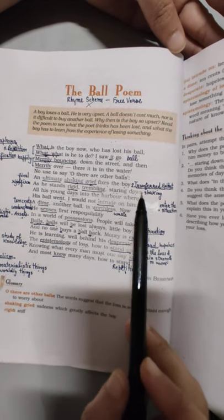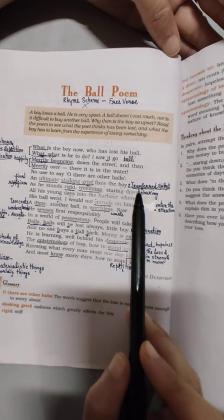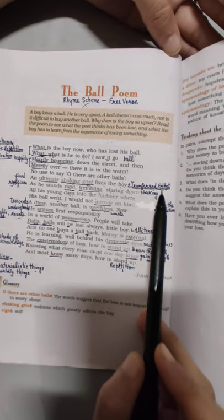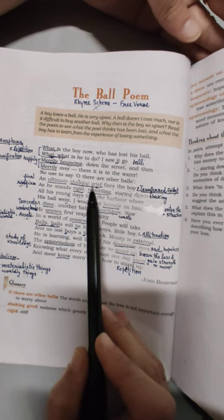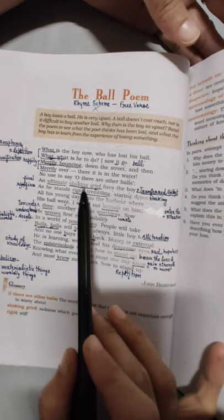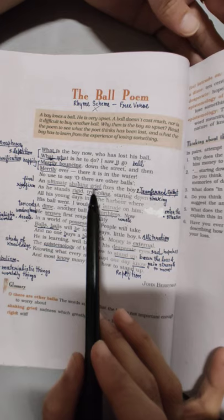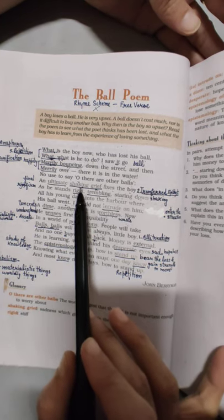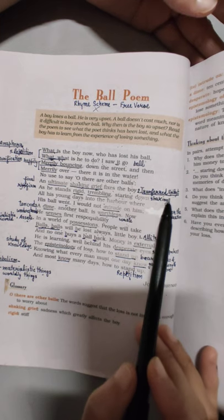Phir next literary device: Transferred epithet. Epithet means adjective, transferred means jahan pe lagna chahiye wahan se transfer karke kisi aur noun ke paas usse lagaya gaya hai. Toh iska example yaha par dekhe, yaha is wali line mein: an ultimate shaking grief. Toh yaha par shaking grief mein transferred epithet ka use kiya gaya hai. Shaking yarni trembling, kaun tremble kar raha hai, kis ki body kaap raha hai - boy ki. Lekin shaking ko boy ke saath use nahi kiya hai, grief ke saath use kiya hai. Kya dukh ko kisi ne kaapte huye dekha hai? Nahi. Toh yaha par shaking jo adjective hai usse grief ke saath transfer kiya gaya hai. Toh yaha par kaun si literary device use ki hai - transferred epithet.